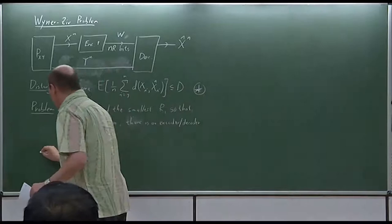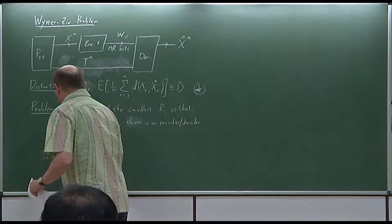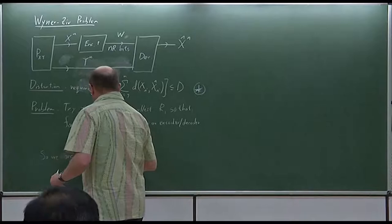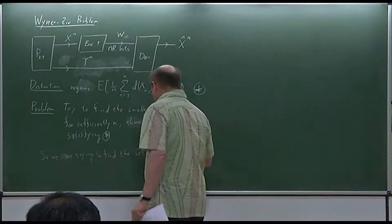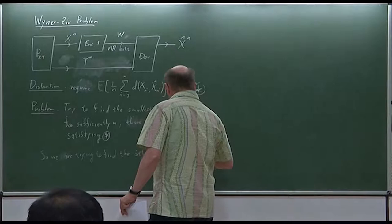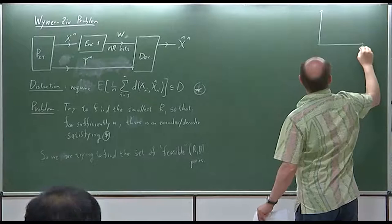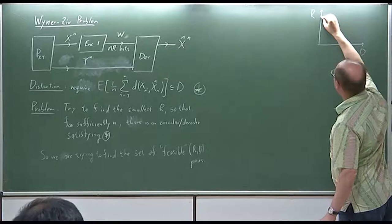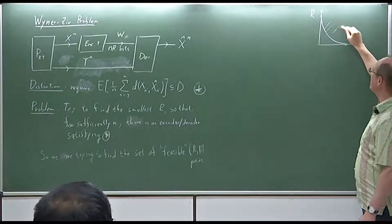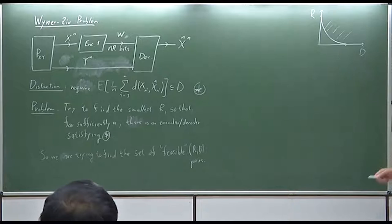So we're looking for rate-distortion pairs. We are trying to find the set of achievable (R, d) pairs. And as usual, like also for the rate distortion problem, we're probably expecting this to be a convex function, and that everything above can be achieved and everything below is impossible. So we're looking for a curve like this for the problem.